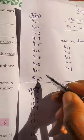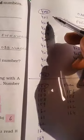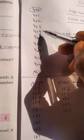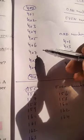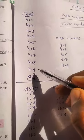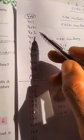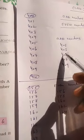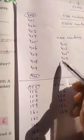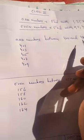400 और 410 के बीच में जितने भी numbers आते हैं उनको हमने write कर लिया। Odd numbers का end होता है 1, 3, 5, 7, और 9 से। So: 401, 403, 405, 407, और 409 — these are the odd numbers between 400 and 410.